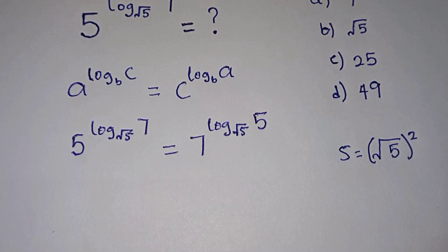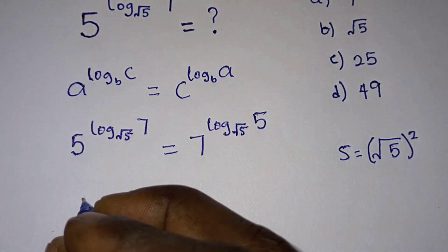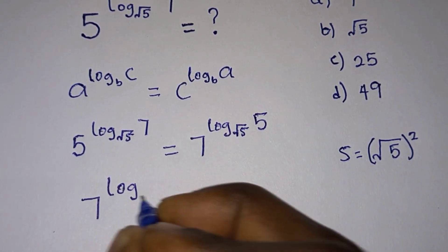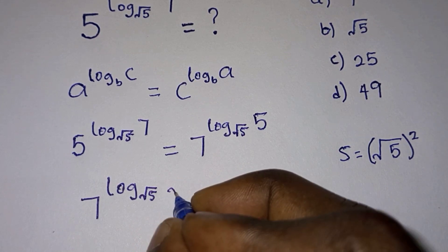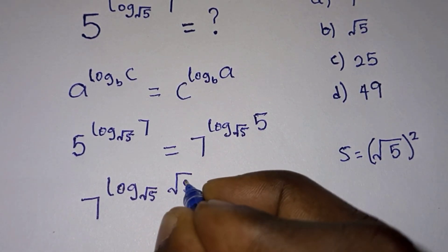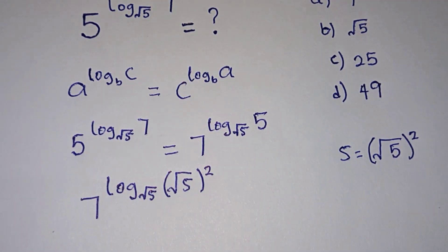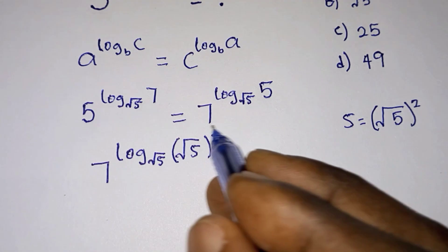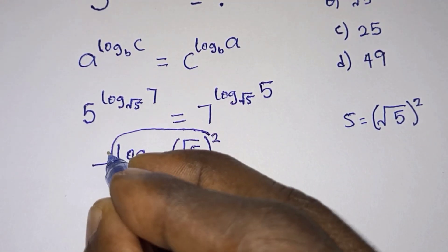Let's go ahead and replace this 5. We're gonna have 7 to the power log base root 5 of root 5 to the power 2. Now we know from one of the rules in logarithm, the power becomes the leading number, so we're gonna bring this 2 in front.